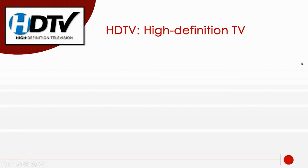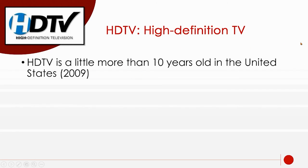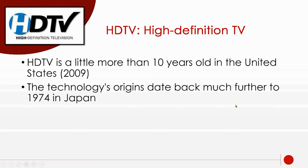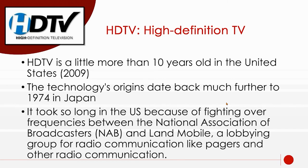Nowadays we have high-definition TV. HDTV has been around for just a little more than 10 years — adopted in 2009. The technology for HDTV has been in Japan since 1974; they went to HD much sooner than we did. The reason we didn't is because our NAB — National Association of Broadcasters — and the mobile phone industry were fighting over the frequencies. Going to HD was right at the beginning of mobile phones, so broadcasters didn't want to give up frequencies.